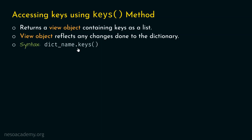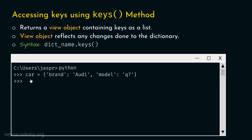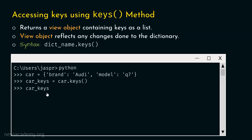The syntax is: first type the name of the dictionary, then dot, then keys. Let's open our command prompt and consider the same car dictionary with two key-value pairs. Let's type car_keys equal to car.keys(). Here I've created a variable car_keys pointing to the view object returned by car.keys(). Let's hit enter and type car_keys to check the view object. We get dict_keys containing brand and model — the two keys of this dictionary.